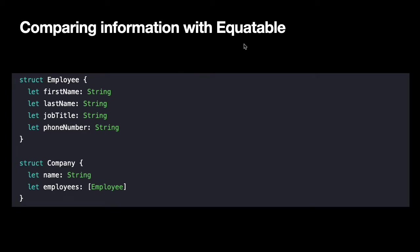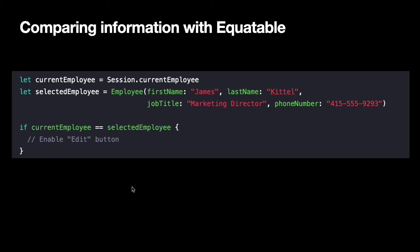Let's look at our next protocol: Equatable. Here we have a struct for a company which has an array of employees, and we want to see if any employees are equal to each other — having the same first name and last name — which would probably mean a duplicate entry. Here's our Employee struct with first name, last name, job title, and phone number. We need to test them for equality, but by default we cannot do that with our custom type.